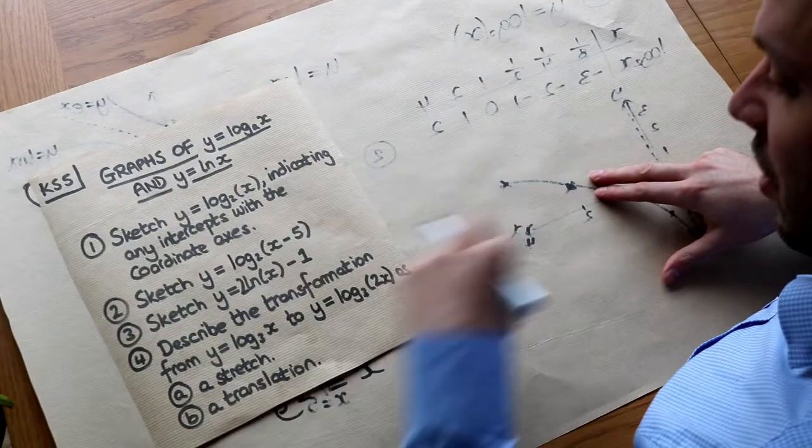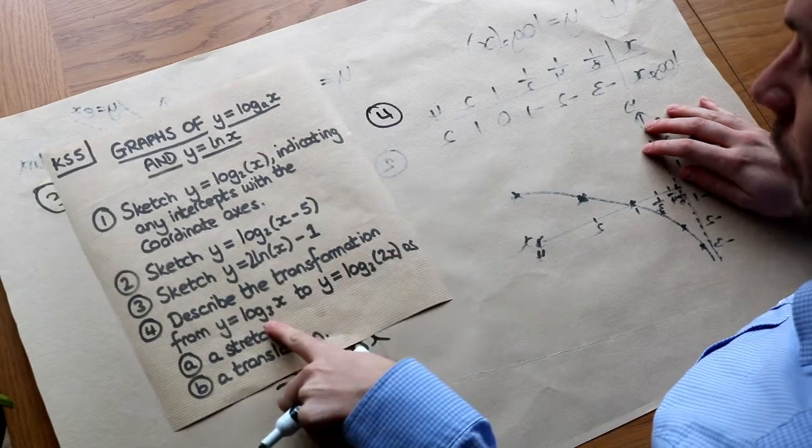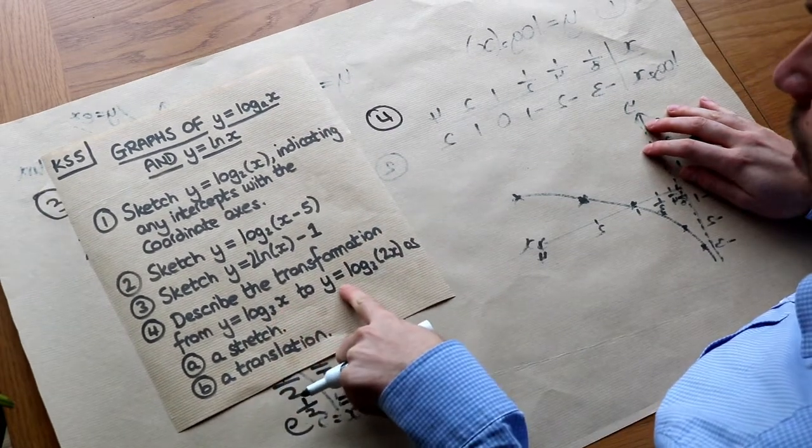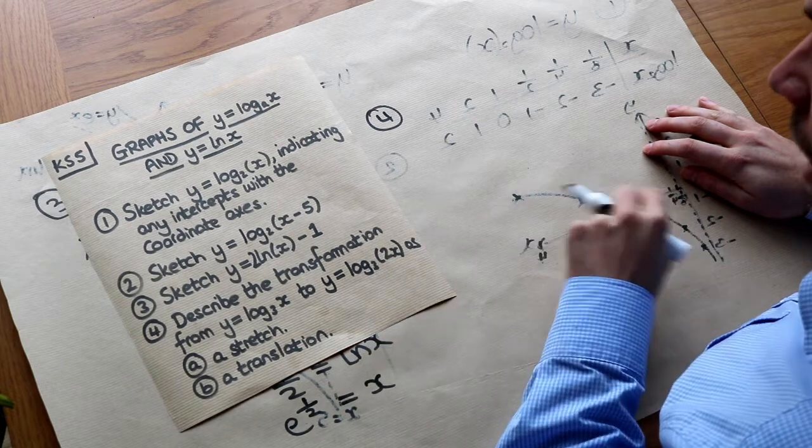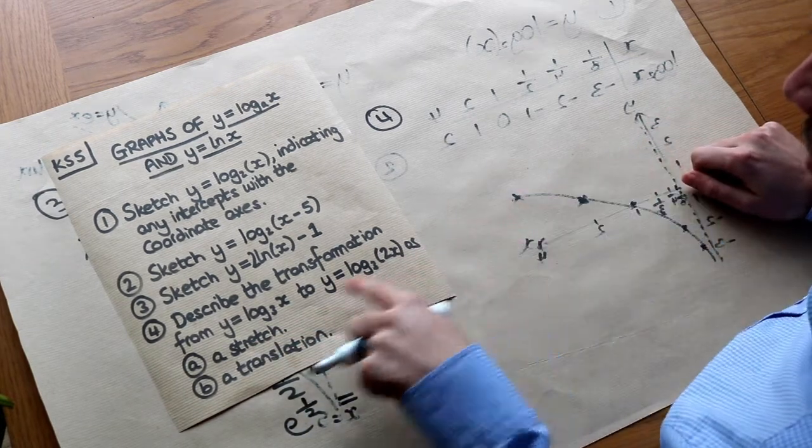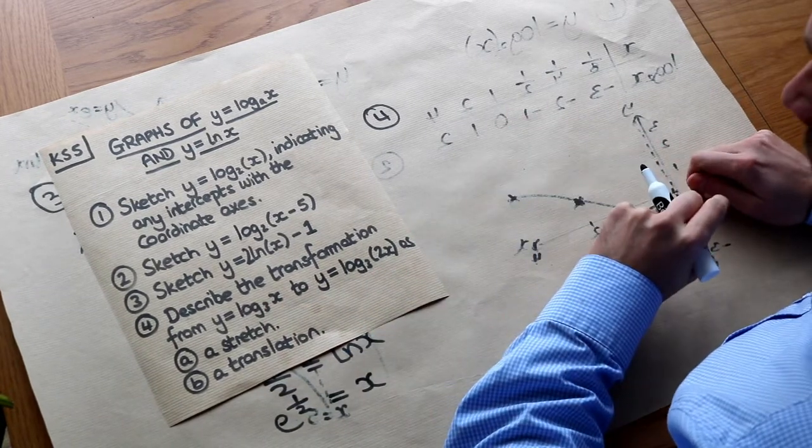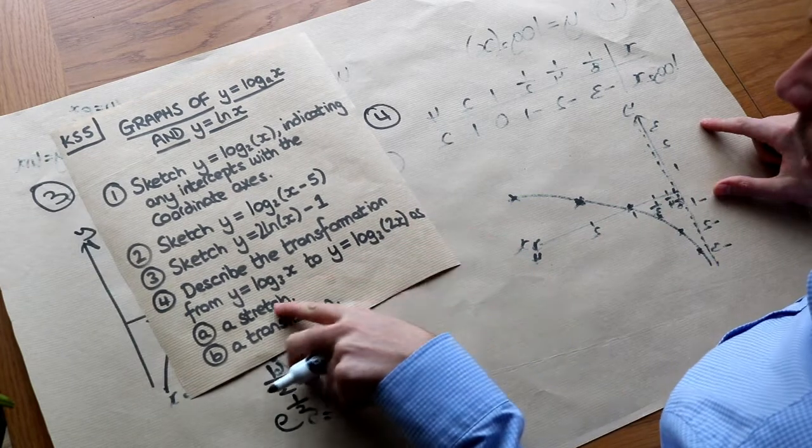And then finally, question 4. Describe the transformation from y equals log base 3 of x to y equals log base 3 of 2x, as a stretch and as a translation. So it's interesting that actually this transformation from here to here could be thought of two different types of transformation.